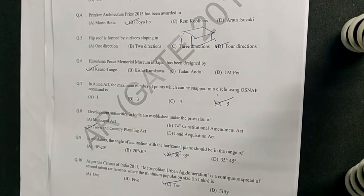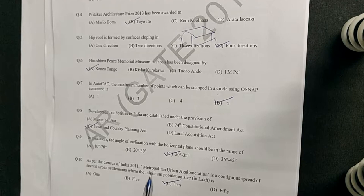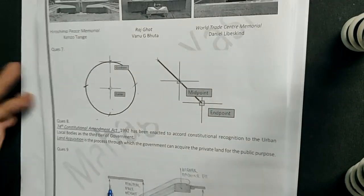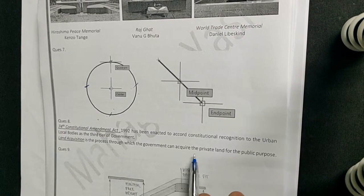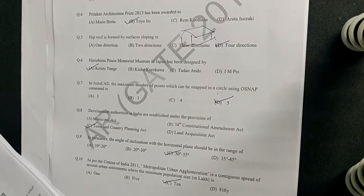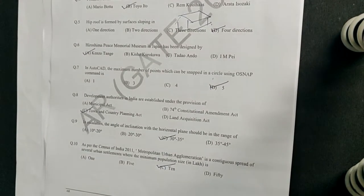The next question: development authorities in India are established under which provision — the Municipal Act, the 74th Constitutional Amendment Act, the Town and Country Planning Act, or the Land Acquisition Act? The answer is the Town and Country Planning Act. The 74th Constitutional Amendment Act accords constitutional recognition to urban local bodies, land acquisition is a separate process for acquiring private lands, and the Municipal Act doesn't apply to development authorities.